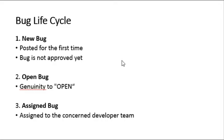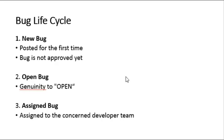Once the new bug is raised, the team leader or test lead verifies the genuineness of the bug. If it is valid, the status is changed from New to Open. Once the team lead changes the state to Open, the bug is assigned to the concerned developer team and the status changes to Assigned. Sometimes the tester, test manager, or development manager will assign the bug to the particular developer.